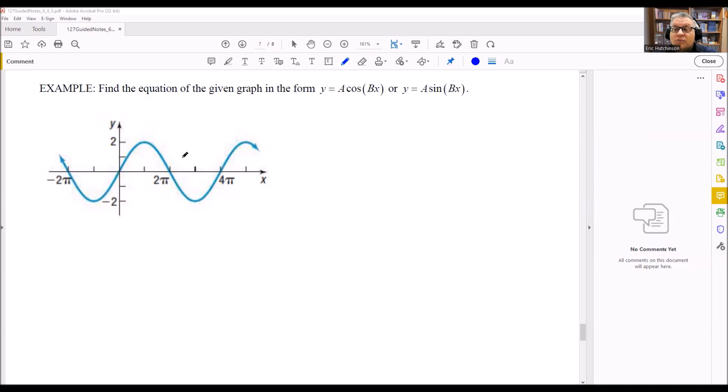So the first thing we're going to do is determine if it's a cosine graph or a sine graph. The way that you can tell is you're going to look at where the graph crosses through. If the graph crosses through (0,0), that means it is a sine graph.